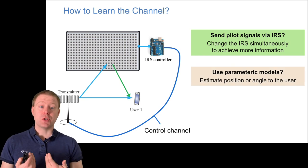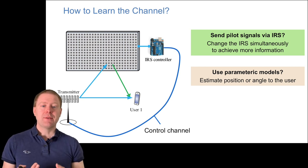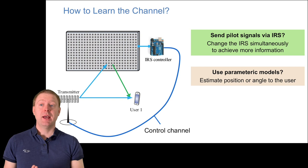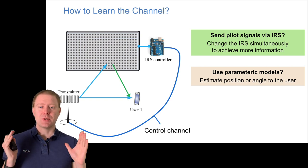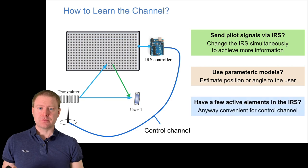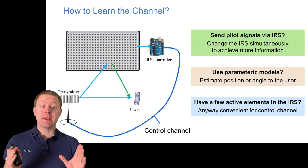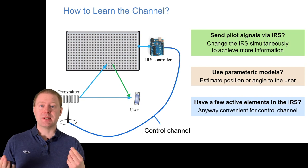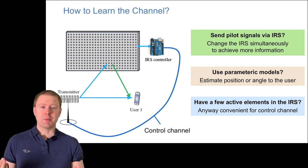It may be important to use parametric models where you estimate angles or user position. If users are in line of sight of IRS, that might be possible, making channel learning much easier than estimating one unknown parameter for each IRS element. One option some people discuss is making some IRS elements active with transceiver chains, so we can make estimates by looking at received signals, maybe with parametric models, to deduce the channel without base station input.